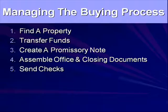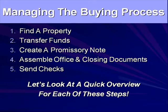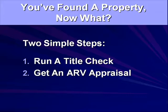Now let's talk about buying the property with private lender funds. Number one: find a property. Number two: transfer funds to the closing table. Number three: create a promissory note — I used to let my closing agent do it, but now I create the document myself and take it to closing so I can prorate the payments to line them up to the 15th of the month. Number four: assemble the office and closing documents. Number five: send checks. If you haven't taken any notes on these five steps, write them down so you've got yourself covered.